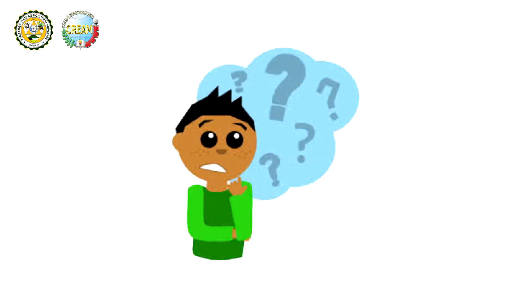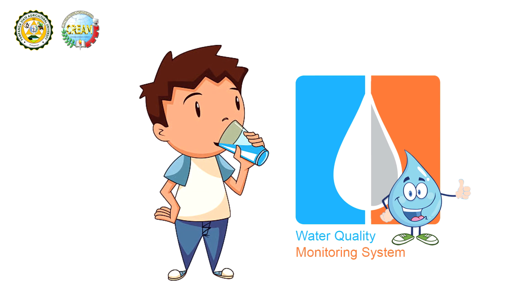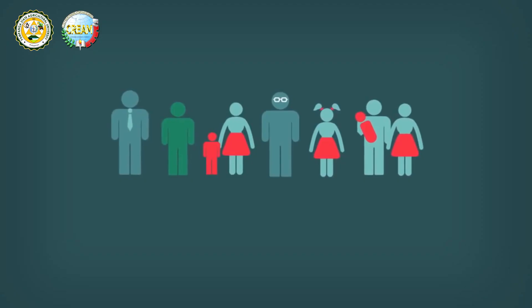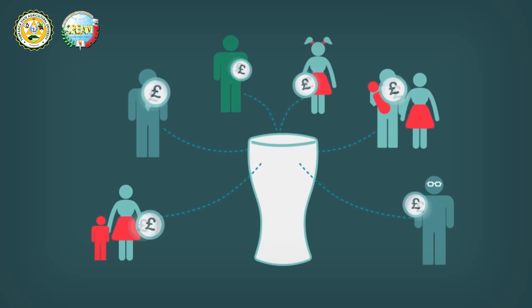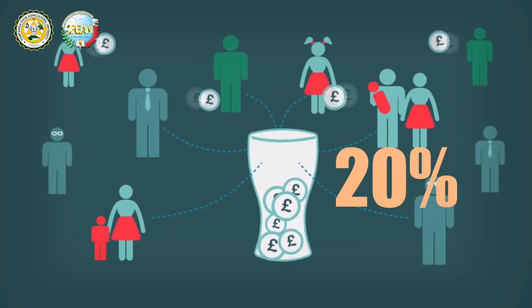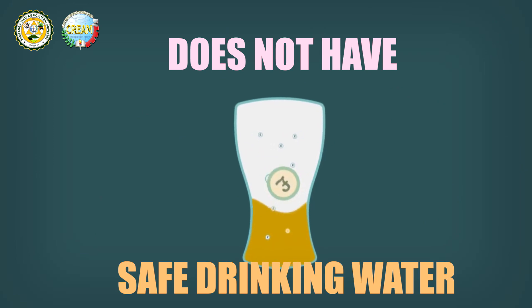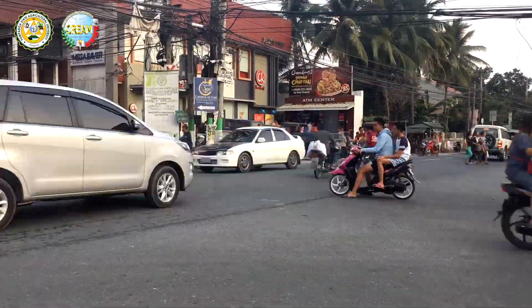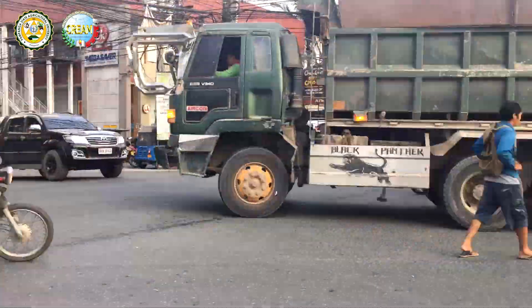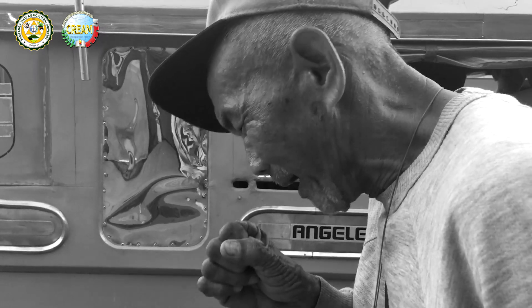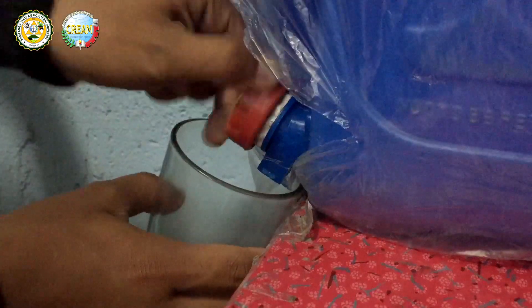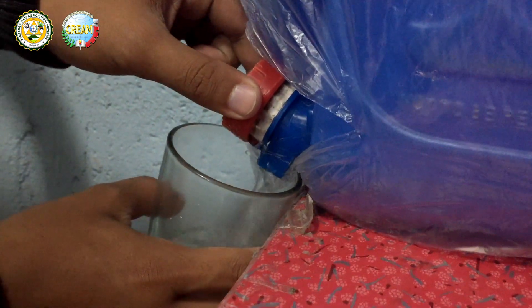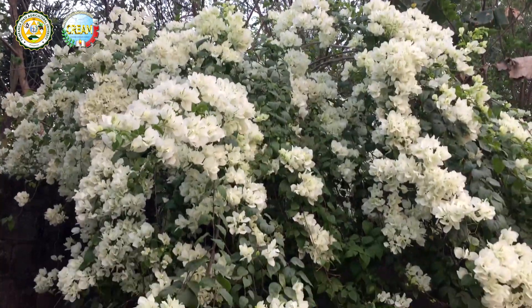Sometimes we don't know if the water is clean or not. The importance of this project is to help all people in a specific community to avoid disease and other kinds of bacteria. In the world, 20% of our population does not have safe drinking water. In our country, the cause of lung infection, diarrhea, and other bacteria comes from our drinking water. Unclean water can also cause water-borne disease, skin disease, and it has bad effects on different types of plants.